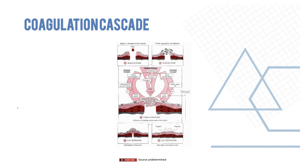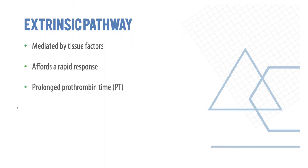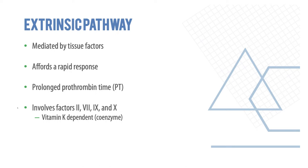The extrinsic pathway is mediated by tissue factors, causes a rapid response, and is seen as a prolonged prothrombin time. It involves factors 2, 7, 9, and 10 — also known as the vitamin K-dependent factors. You may be asked which factors are vitamin K-dependent, so remember: 2, 7, 9, and 10. Inhibition of vitamin K can be done by warfarin.